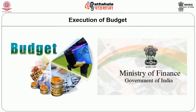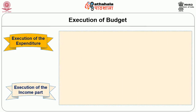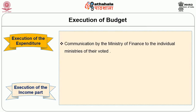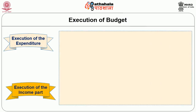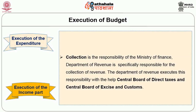The main stages in execution of the budget are execution of the expenditure side. After the budget is passed, it is now the turn of Ministry of Finance to start the process of its execution — in a way, it is the reverse of the process of budget preparation. The main steps are: first, communication by Ministry of Finance to the individual ministries of their voted money; second, communication by the controlling officers to the DDOs; and third, start of expenditure by the DDOs by opening accounts with the treasuries. With regard to execution of the income part, it is the responsibility of the Ministry of Finance and the Department of Revenue specifically. The Department of Revenue executes the responsibility with the help of the Central Board of Direct Taxes and Central Board of Excise and Customs. The Department is expected to ensure proper collection, custody, and distribution of funds.